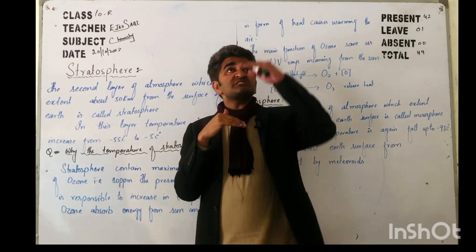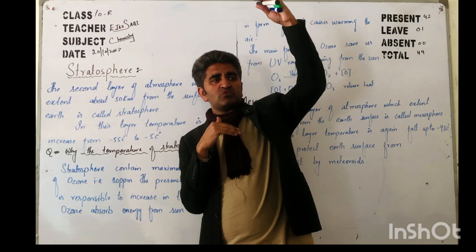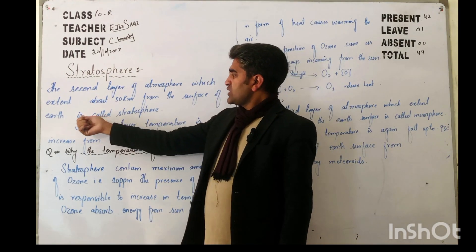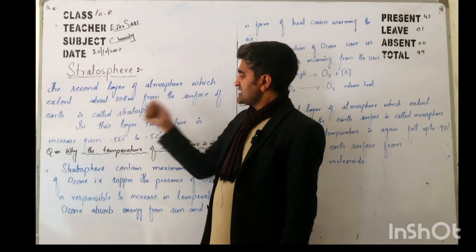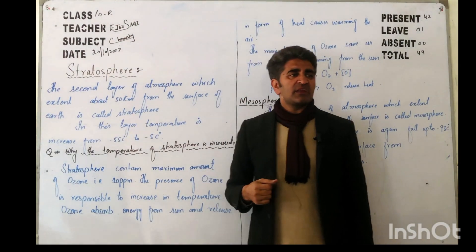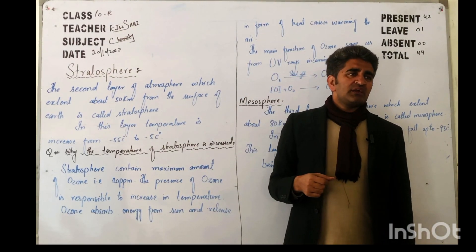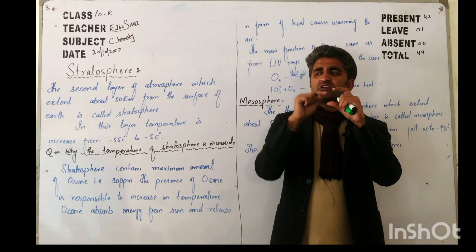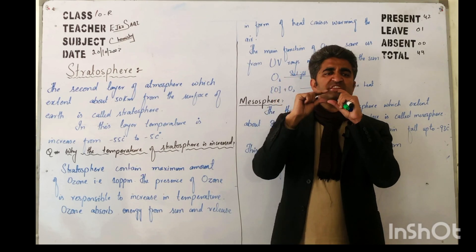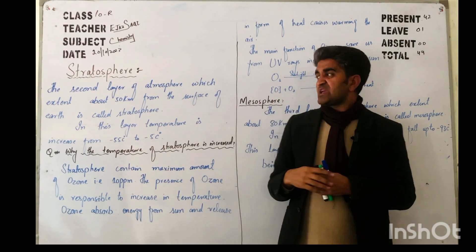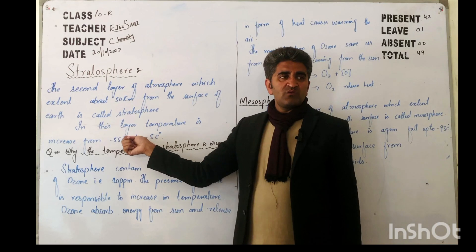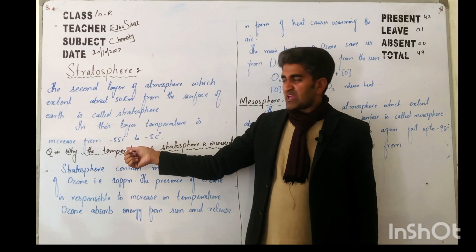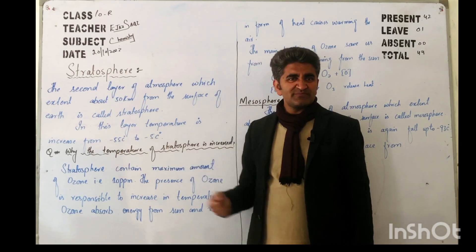Earth surface 50 kilometers above the surface. What is the range of this layer? The temperature in this layer increases. Temperature increases in this layer. So this is increase or decrease? Increase.